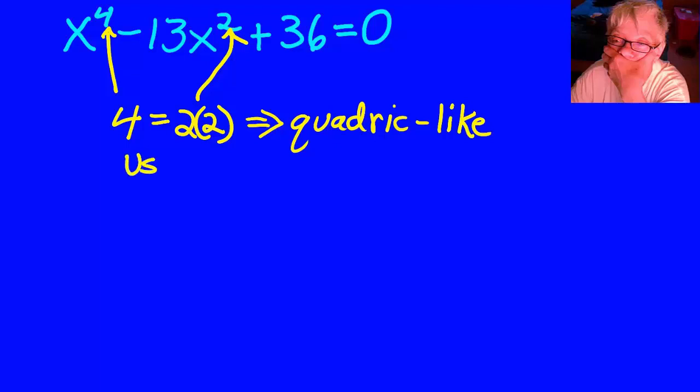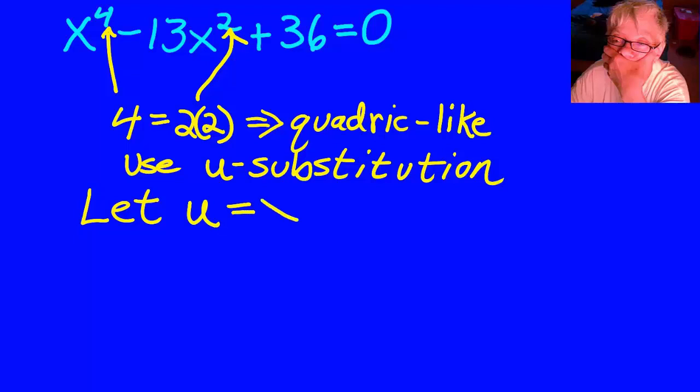As you'll see, we're going to use a very old process called u-substitution. We let u equal the middle term x-squared. Then u-squared will equal x-squared-squared. Because u is x-squared, u-squared is x-squared-squared.